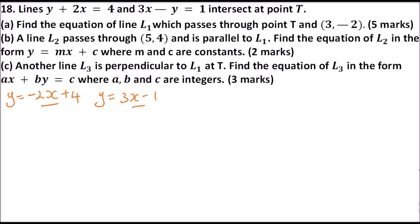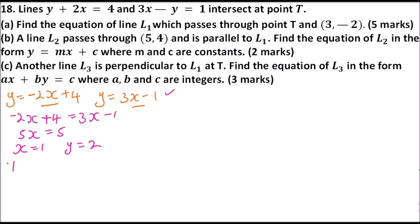We equate the two expressions: negative 2x plus 4 equals 3x minus 1, since they share a point. Taking 2x across gives 5x, and taking 1 across gives 5, so x equals 1. Substituting back, y equals 3 times 1 minus 1 equals 2. Therefore, the coordinates of T are (1, 2).